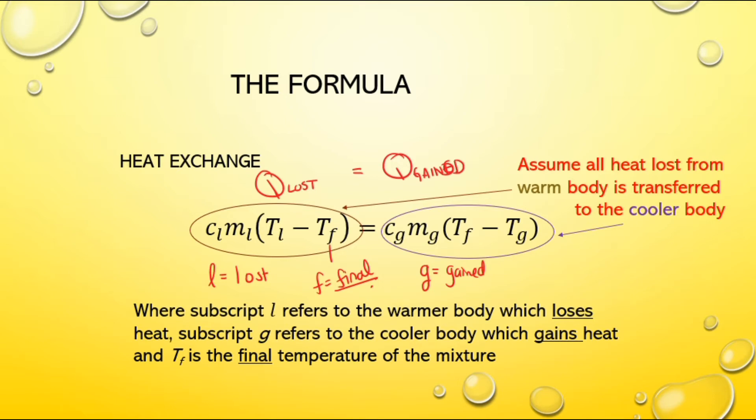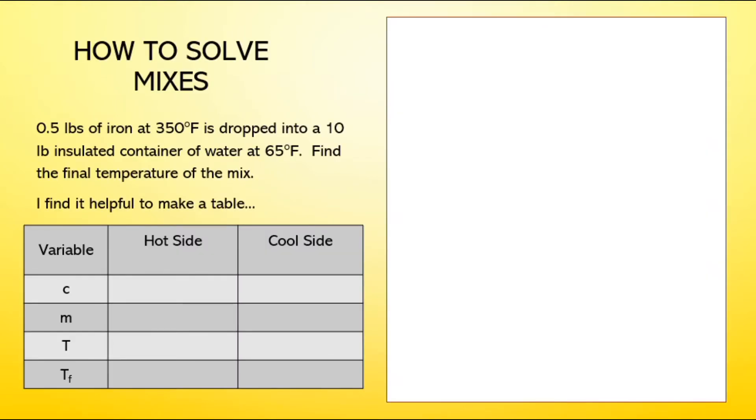This is going to involve algebra. But there's a nice way to set it up that I'd like to show you. Using a table is going to make this way more easy for you. I just always set up a table that looks like this. I list my three variables. I have the final temperature here. First thing I do is I decide what's hot and what's cold. If iron's at 350 and water's at 65, the hot side is iron. And I always even write it down because sometimes everything gets confusing.